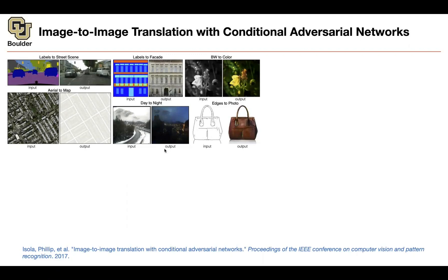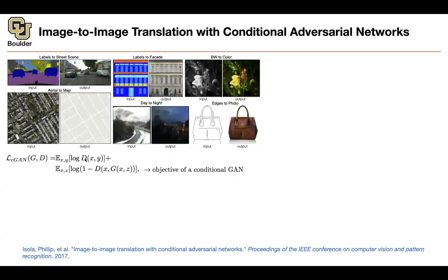This is also useful for fashion — you draw a sketch or the edges of a shoe and then translate it to a photo. So what is the framework? You're going to have a loss function coming out of a discriminator. The discriminator is giving you your loss function, and this is conditional. What you're conditioning on is X — in this case, X is your semantic labels, or your input.